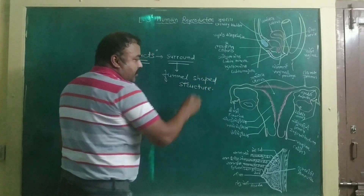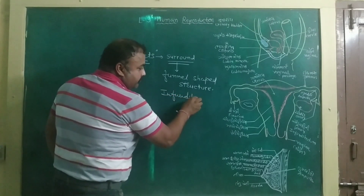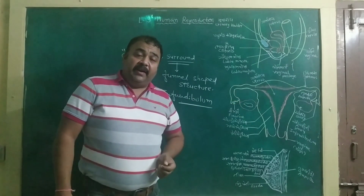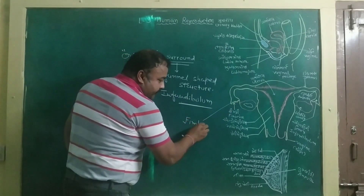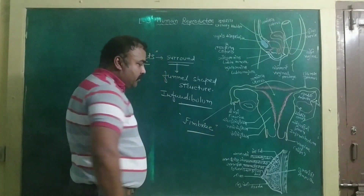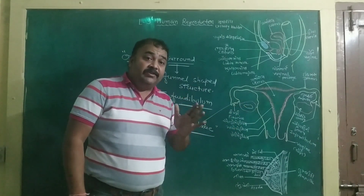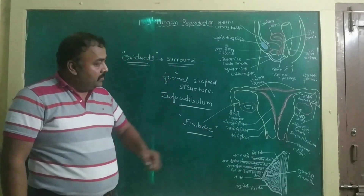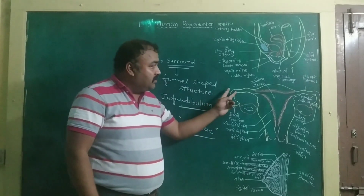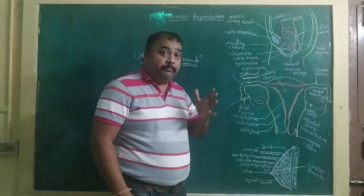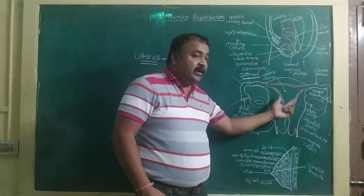The funnel-shaped structure near the ovaries is known as the infundibulum. The ridges of the infundibulum possess finger-like projections which are known as fimbriae. The main function of the fimbriae is to transport the released ova from the ovary into the oviducts. At the posterior part of the oviducts, there is a narrower portion known as the isthmus, and both isthmus join to the uterus on their inner side.